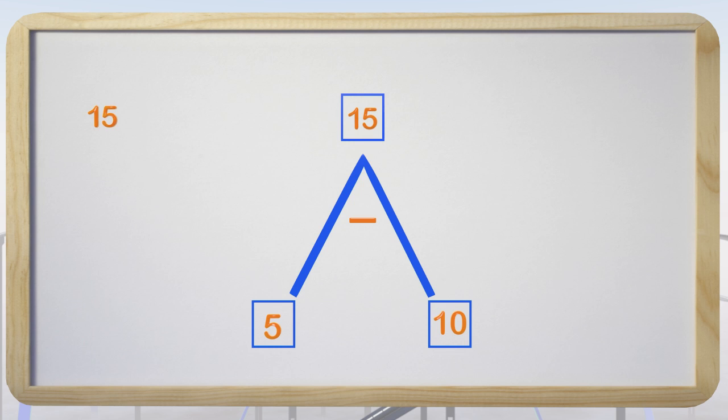We start this time with 15, and we subtract the addend on the left. What number is the addend on the left? You're right, the addend on the left is 5. So in our equation, we have the total, which is 15, subtract the addend on the left, which is 5, and then we have our equal sign. What is 15 subtract 5?